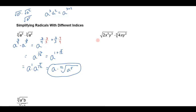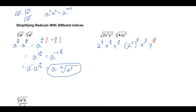Let's do something like that on this one. I've got the square root of 2x cubed y cubed times the cube root of 4xy squared. I'm going to write this as 2 to the one-half power, x to the three-halves power, y to the three-halves power, and then over here I've got 4. I'm going to think of that 4 as 2 squared, simply because I see I have a base of 2 over here as well. So I've got 2 squared to the one-third power, x to the one-third power, and y to the two-thirds power.